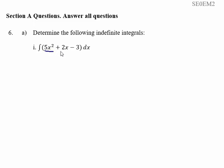For the second term, we've got x to the 1, so we raise the power by 1 so that becomes x squared, and then we divide by the new power, so it becomes 2x squared over 2, or simply x squared.